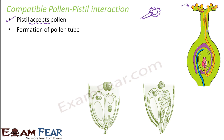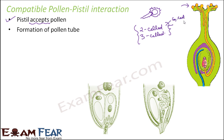The pollen tube grows through the tissues of the stigma and the style, and finally it reaches the ovary. This tube is quite long so that it can reach from the stigma all the way to the ovary. Pollen grains can be produced either in the two-cell stage or in the three-cell stage, depending on the plant. In the two-cell stage you have a generative cell, which will form the male gametes, and a vegetative cell, which is the tube cell.